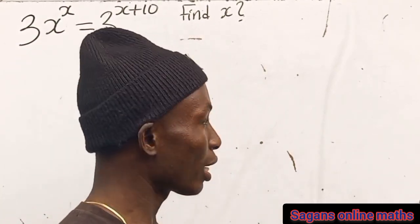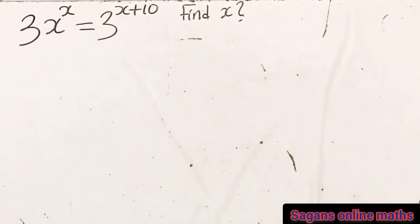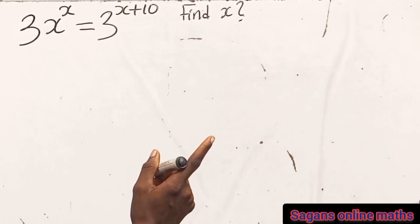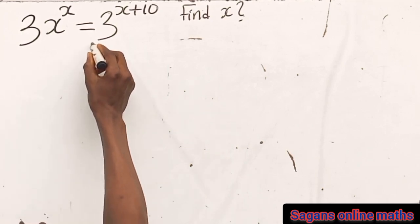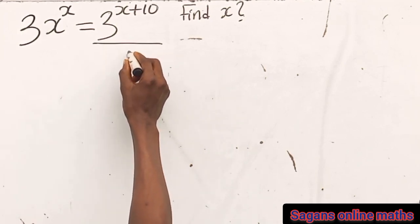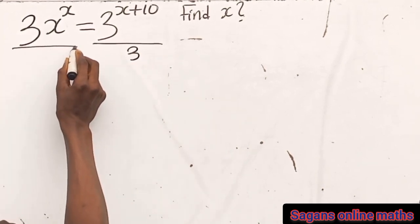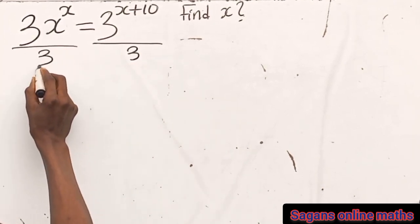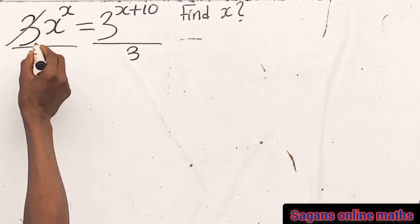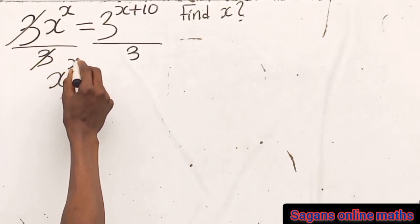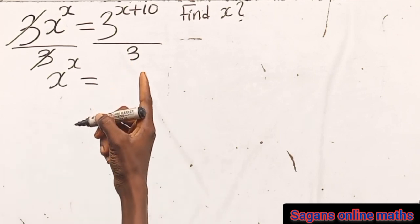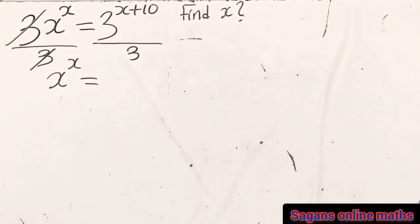Now let's get started. Our first step is to divide both sides by 3. So if we divide here by 3 and divide here by 3, we know that the 3 on the left will cancel out, and we are left with s to the power of x equals...